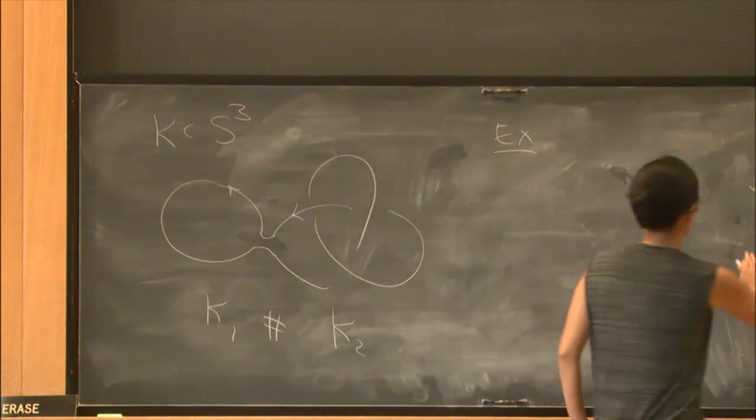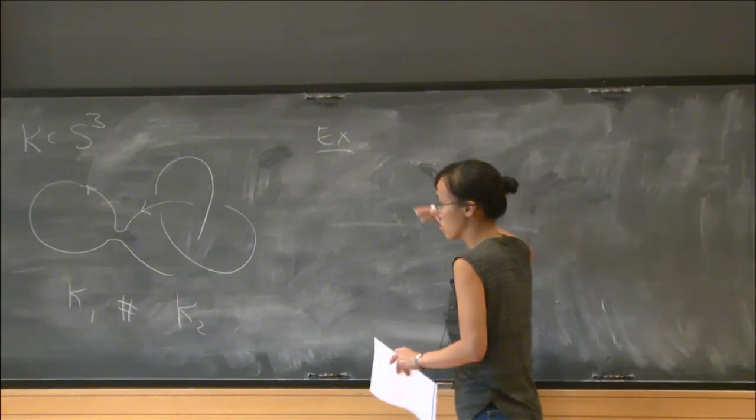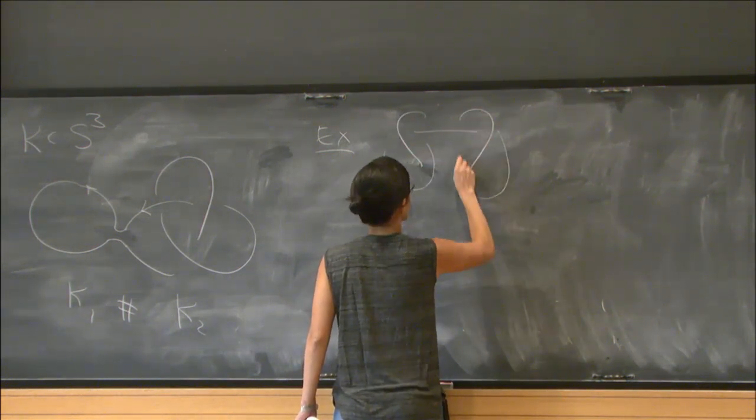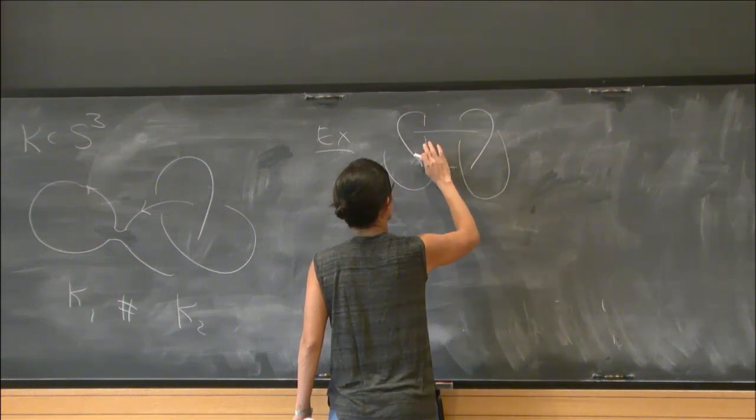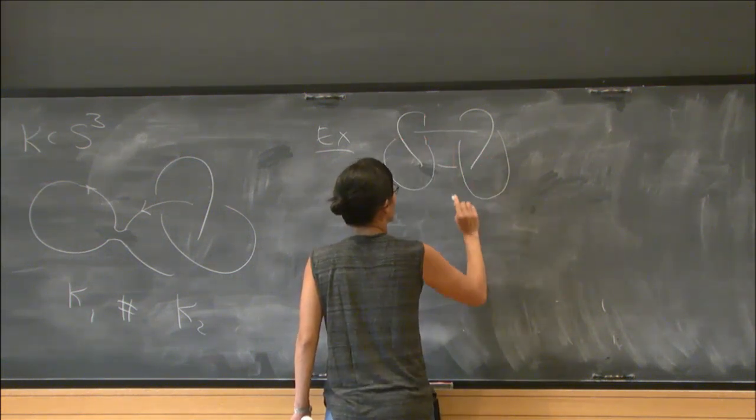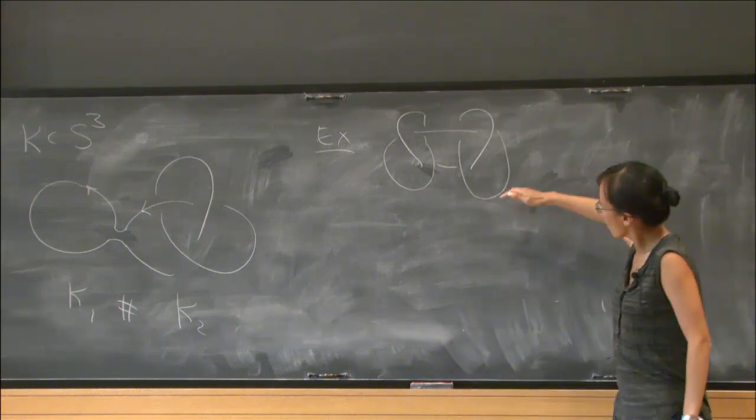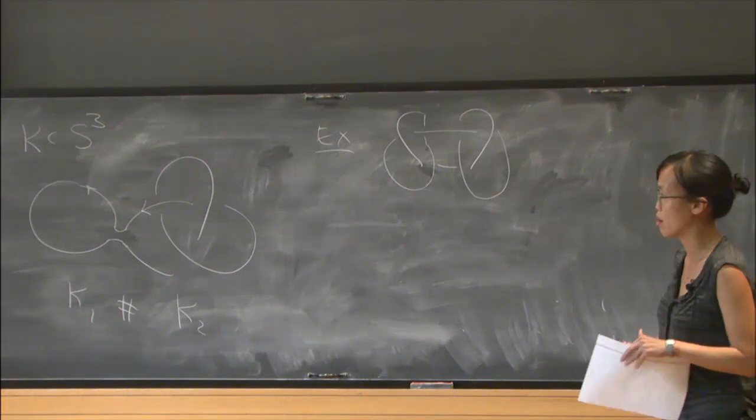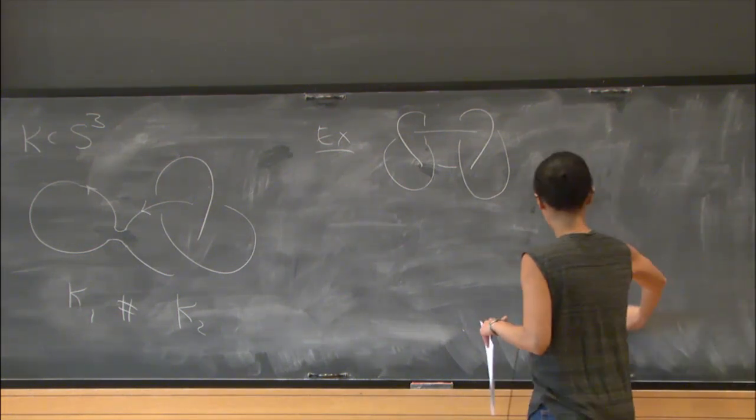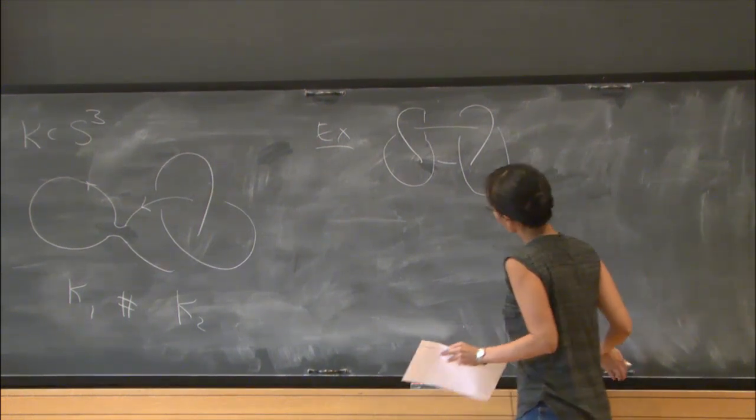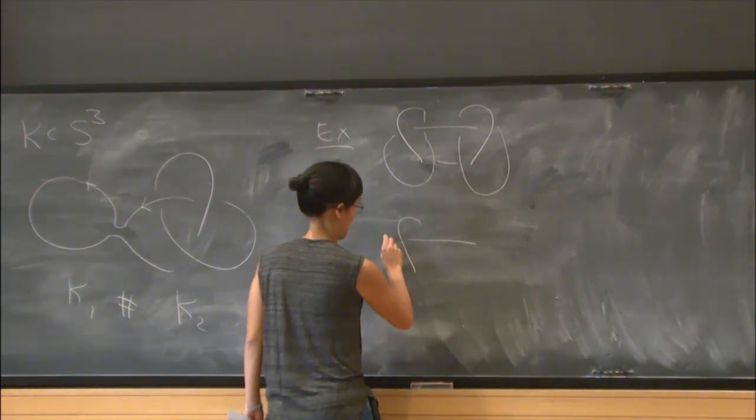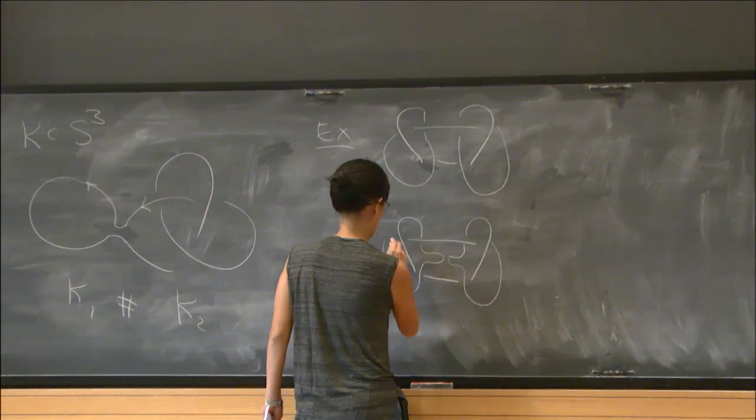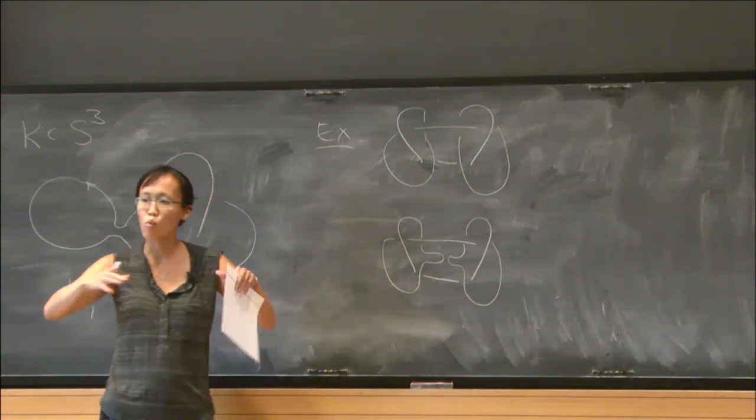So starting on one end, we'll start with this knot. I'm going to draw the knot that we see at each time slice. I'm also going to draw the surface that we're sweeping out in S³ × I. So the first thing we're going to do is perform an isotopy.